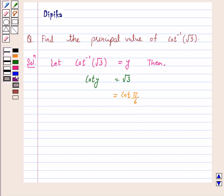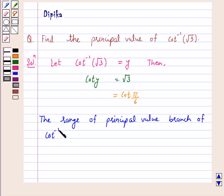According to our key idea, the range of the principal value branch of cot inverse is open interval 0 to pi, and cot pi by 6 is equal to root 3.